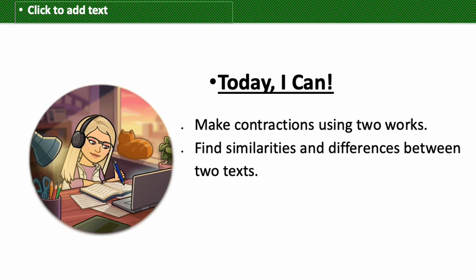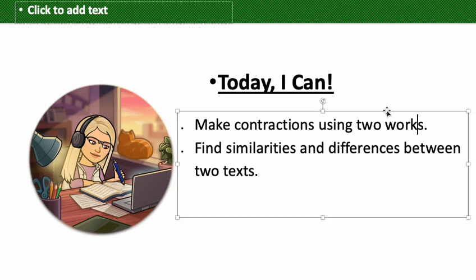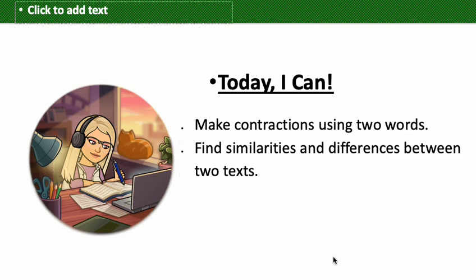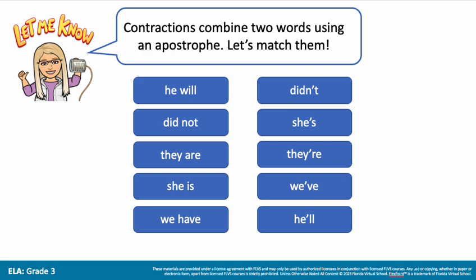So today we can make contractions by using two words. Then we're also going to be looking at finding similarities and differences between two different texts. A contraction is when you combine two words with an apostrophe.